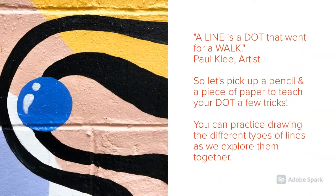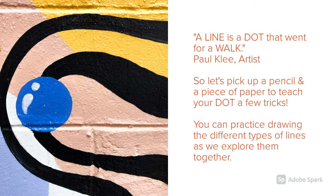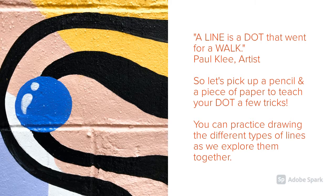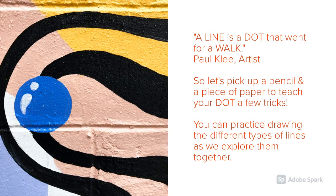According to German artist Paul Klee, a line is a dot that went for a walk. So let's pick up a pencil and a piece of paper and teach your dot a few tricks. You can practice drawing the different types of lines as we explore them together. Are you ready?